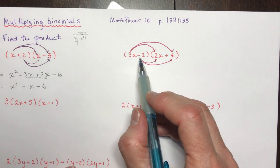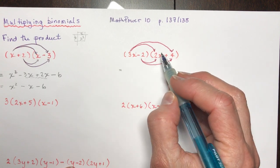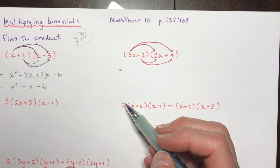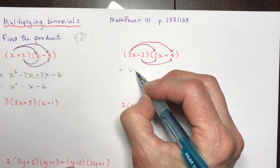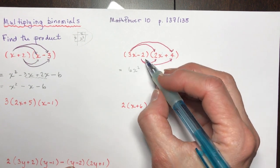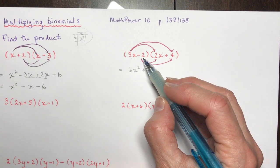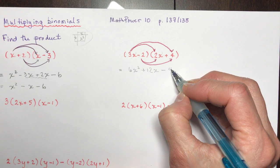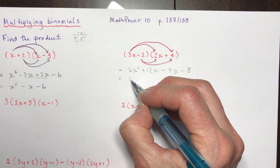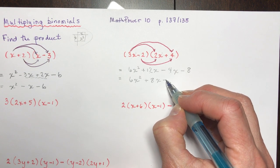So I have 3x times 2x. Using the laws of exponents, x times x is x squared — you can think of both as to the power of one, so you add them. Three times two is six, giving 6x squared. Then 3x times 4 is 12x. Now negative two times positive two is minus 4x, and minus two times plus four is negative eight. Combining the middle terms: 12 minus 4 is 8x, minus 8.